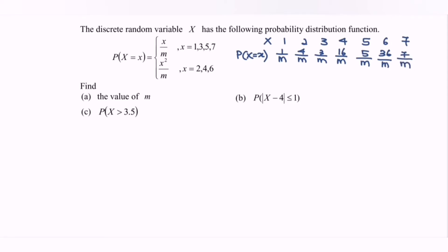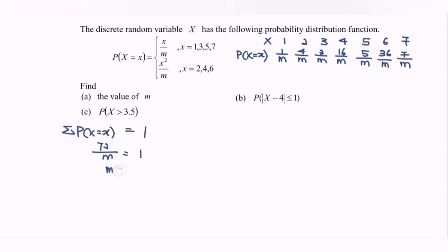As we all know, in order to find the value of m, since this is a discrete random variable, the summation of all probabilities equals 1. Since we have the same denominator m, we add the numerators: 1+4=5, plus 3 equals 8, plus 16 equals 24, plus 5 equals 29, plus 36, and finally plus 7. So we get 72/m = 1, which means m = 72.